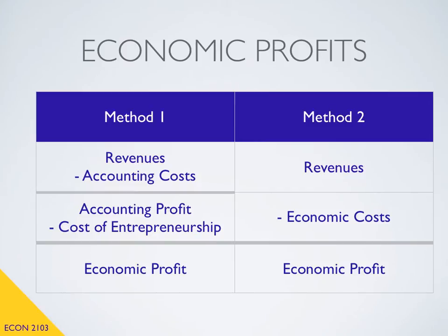What I want you to see is that method one and method two are equivalent ways of computing economic profit. In both cases, we start with revenues. In both cases, we subtract off the cost of our land, the cost of our labor, the cost of our capital, and the cost of our entrepreneurship. It's just that in method one, we break that out into two steps, whereas in method two, we subtract off the cost of all of our resources in one step, giving us our economic profit. For the remainder of this lesson, we'll focus on method one to better understand what this cost of entrepreneurship really means.